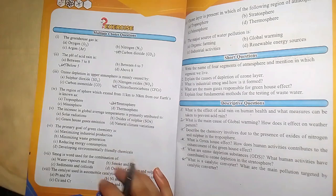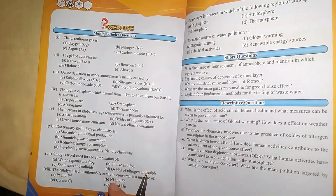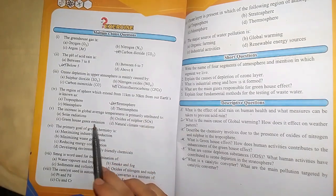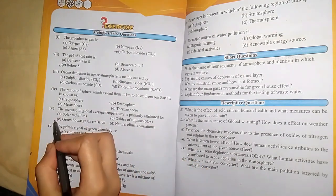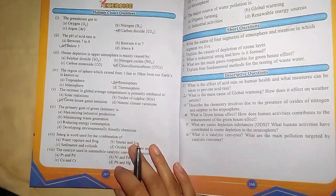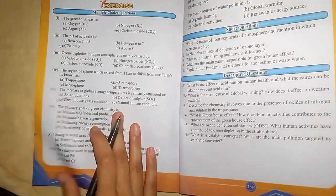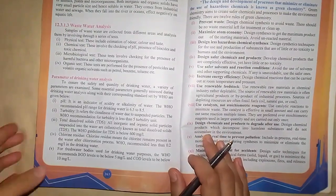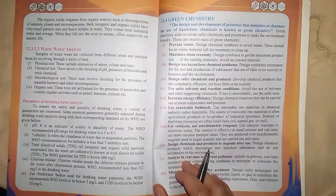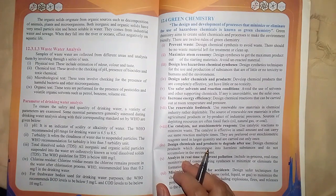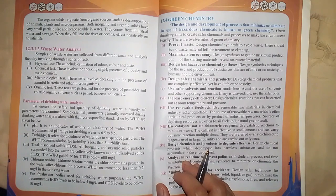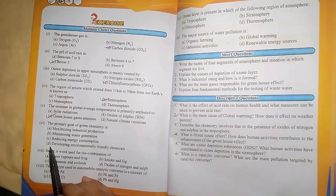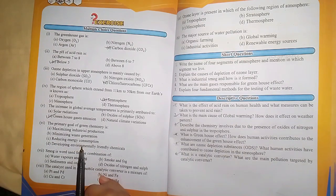MCQ number 5: Increase in global average temperature is primarily attributed to greenhouse effect, which causes temperature rise. The correct option is C. MCQ number 6: The primary goal of green chemistry is to design and develop processes which minimize and eliminate use of hazardous chemicals to create safer chemicals and processes that are environment friendly. The correct option is D, developing environmentally friendly chemicals.